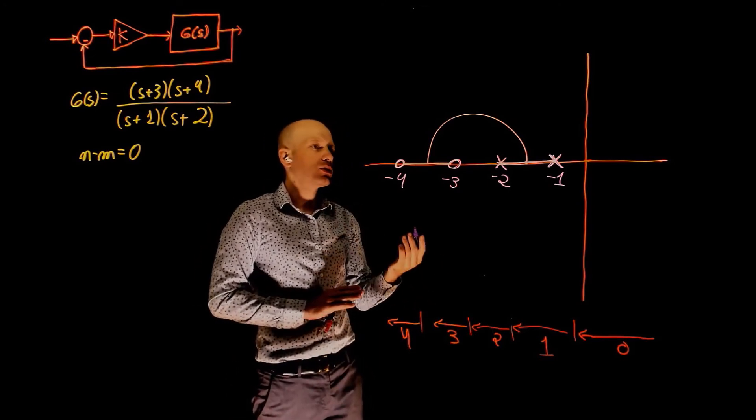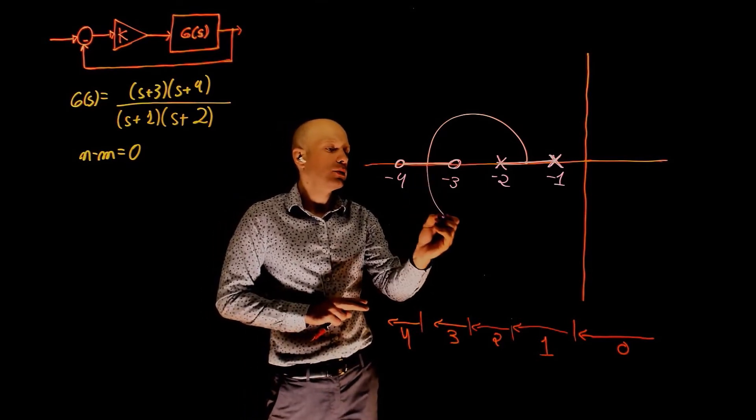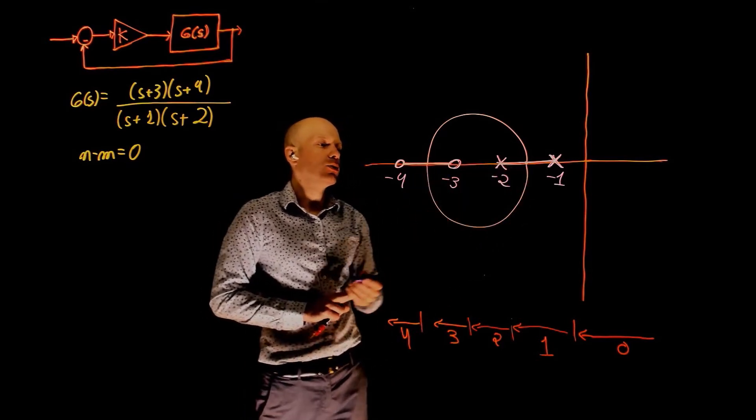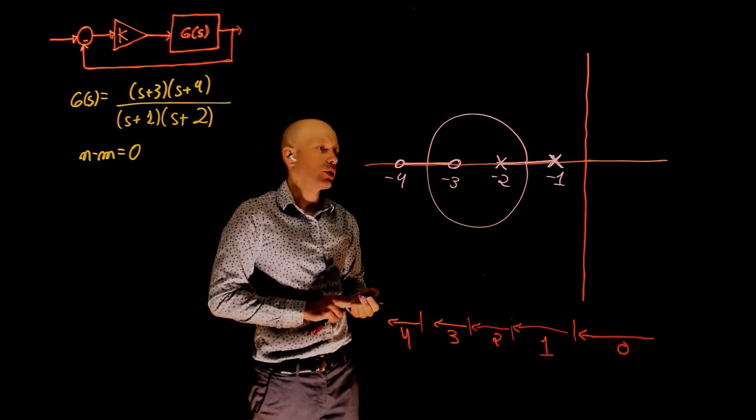And because the root locus needs to be symmetric with respect to the real axis, I have to complete this loop in a way that I have a symmetric root locus.